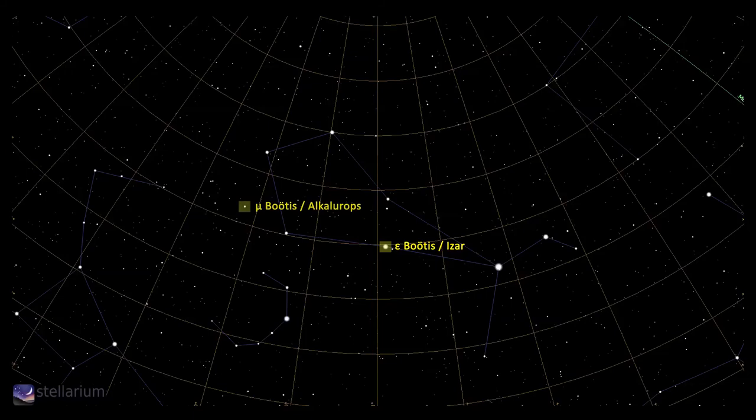Next we have Mu Boötis, which is another triple system with the primary appearing as a magnitude 4.3 blue-white star. The secondary initially appears as a magnitude 6.5 but is actually a close double star itself, with a primary of magnitude 7 and a secondary of magnitude 7.6.